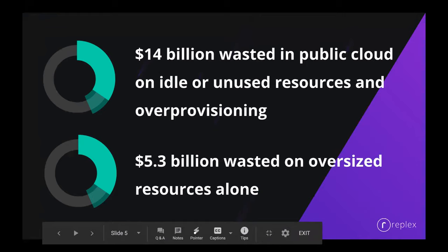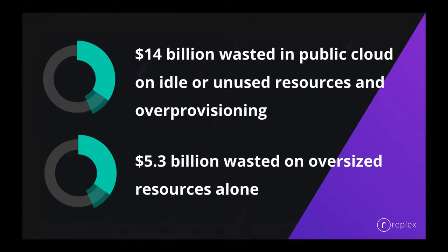Now that we've looked at why it's important to monitor Kubernetes cluster utilization, let's look at a couple more numbers in the context of performance and costs. $14 billion is being wasted yearly in public cloud spend on idle or unused resources and overprovisioned instances. $5.3 billion of this is wasted on oversized resources alone. Most of the infrastructure provisioned around these workloads is not being utilized efficiently, which is essentially driving up costs without adding anything to the bottom line.